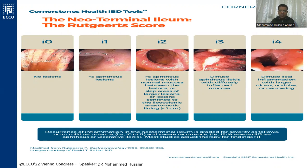The Rutgeerts scoring system classifies patients as follows: i0 means no lesions present at the ileocolonic area; i1 means there are less than five aphthous ulcers at the ileocolonic area; i2 means there are more than five aphthous ulcers with inflamed mucosa, extending less than one centimeter from the ileocolonic anastomosis.